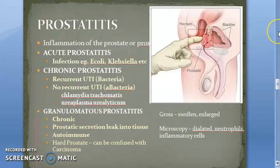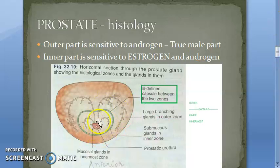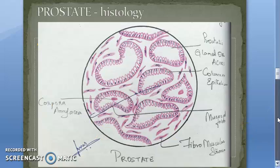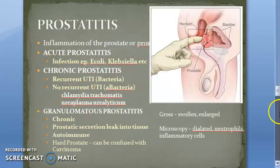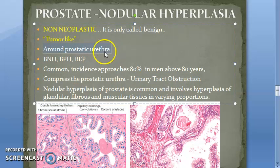This condition occurs around the urethra — specifically the prostatic urethra. If you look at the diagram, this is the prostatic urethra, and around it benign prostatic hyperplasia will occur. Hyperplasia means an increase in the number of cells — the same cells, just more of them — and hence there will be compression of the urethra, leading to urinary tract obstruction.